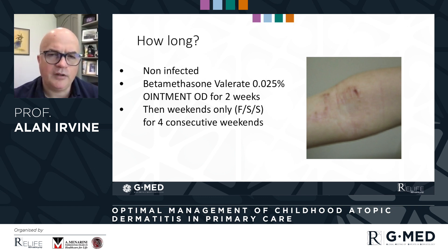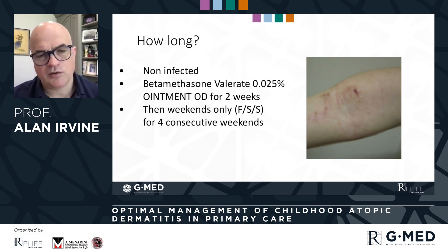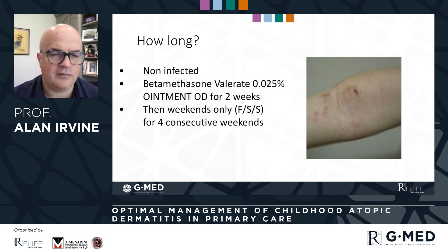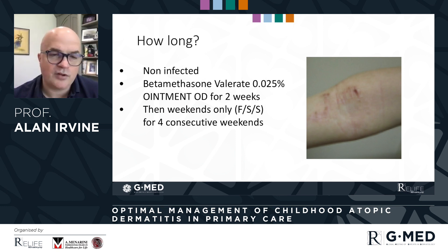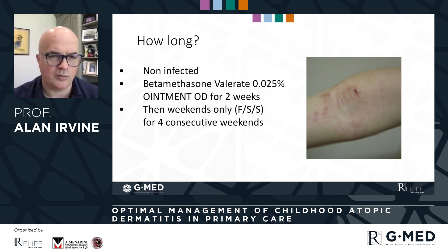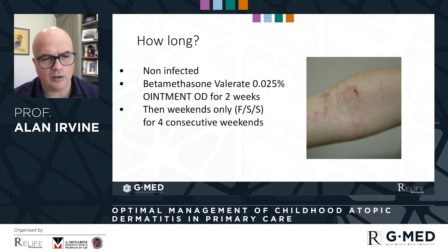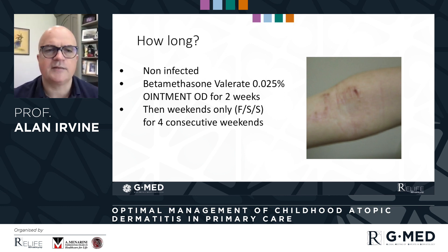How long do we use steroids? This is individualized — you have to define the treatment in relation to the child in front of you. If it's not infected eczema, we'll use something like betamethasone ointment for two weeks and then transition down to weekend maintenance therapy. That will depend on how long the child needs it and how severe the eczema is.